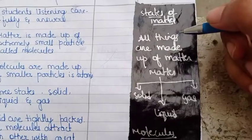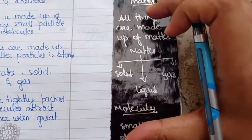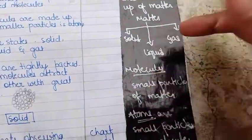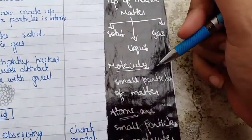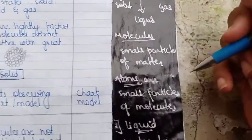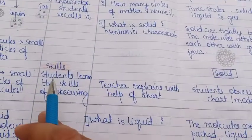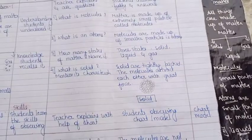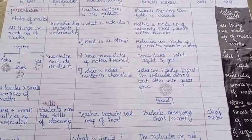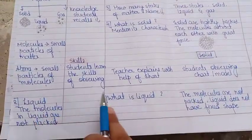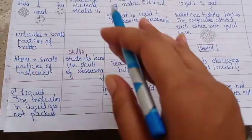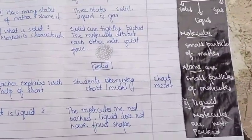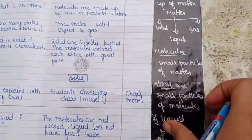We have to write the lesson plan very effectively so that it looks good and is impactful for students. Here you can see the teacher explains with the help of a chart, and students are observing the chart or chart model. These things follow the same process — questions related to the topic, expected answers from students, and blackboard work.